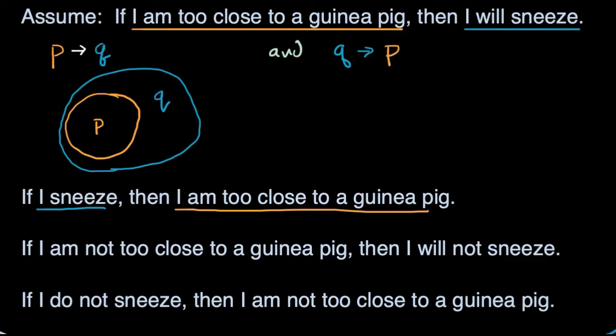And so if I were to draw that as a Venn diagram, these circles would perfectly overlap. So this would be P and then Q would be the exact same circle. So the only scenarios in which I'm sneezing, I'm too close to a guinea pig. And the only times that I'm too close to a guinea pig, I'm also sneezing. So that's Q right over there.